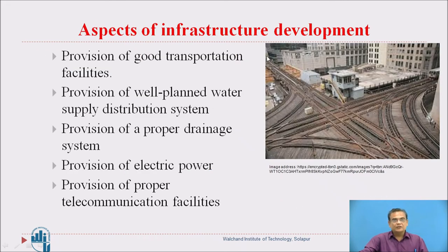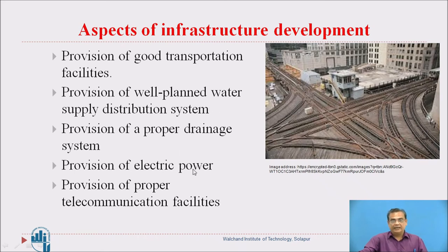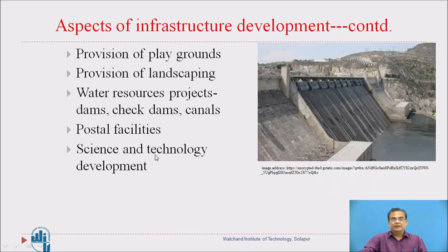Aspects of infrastructure development include: provision of good transportation facilities, well-planned water supply distribution systems, proper drainage systems, electric power and telecommunication facilities, playgrounds, landscaping, water resource projects like dams and canals, and science and technology development.